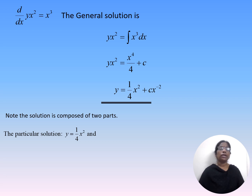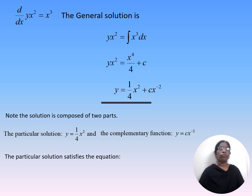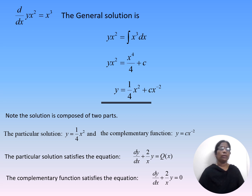We observe that the general solution consists of two parts: x²/4 and c·x⁻². Here x²/4 is called the particular solution and c·x⁻² is called the complementary function. The complementary function satisfies dy/dx + (2/x)·y = 0, and the particular solution satisfies dy/dx + (2/x)·y = Q(x).